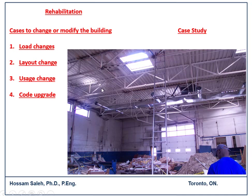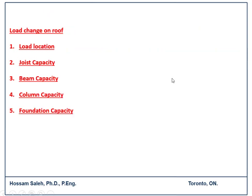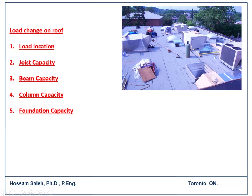To explain this further, I have a case study — one of our office projects, an older building. You can see it is already existing and undergoing rehabilitation. They added a mezzanine, added new loads on the roof, changed the location of the skylight, and made significant modifications to the building. Here you can see the load locations — there is a new heating unit on the roof, and the work is still ongoing, as seen during one of our site visits.